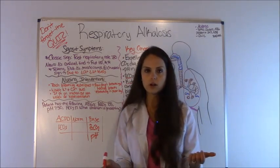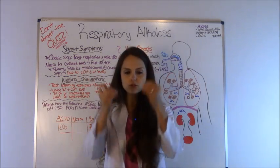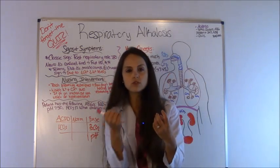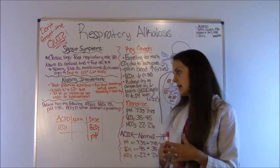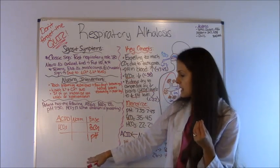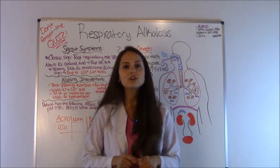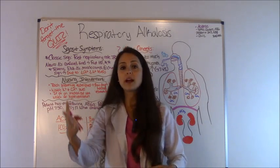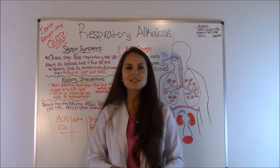Now we need to determine if it's fully or partially compensated by looking back at the pH. The kidneys are excreting bicarb to bring the pH back to normal from its elevated state. Our pH is 7.5, which is still abnormal, so it has not fully compensated yet. Therefore this is respiratory alkalosis, partially compensated. It would be fully compensated if the pH were within normal range, but it's not. Be sure to go to RegisteredNurseRN.com and take the free quiz on respiratory alkalosis and acidosis, check out my other teaching tutorials, and thank you so much for watching — please consider subscribing.